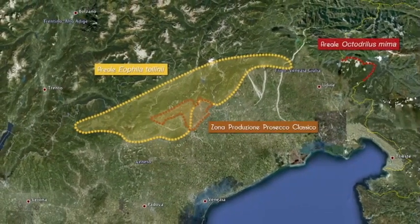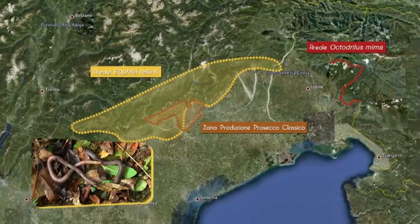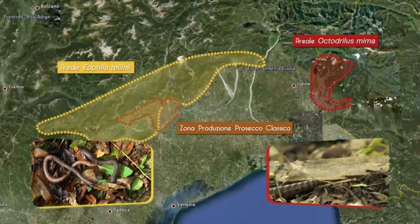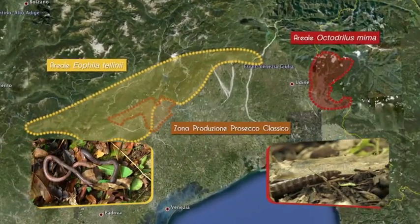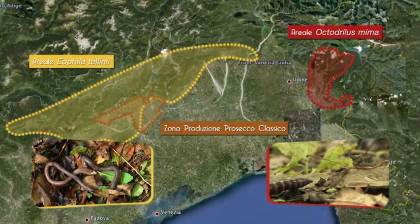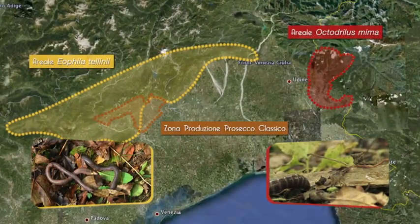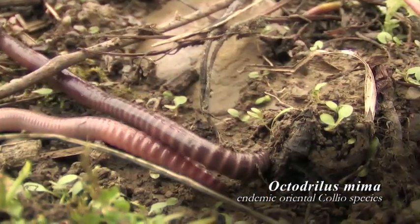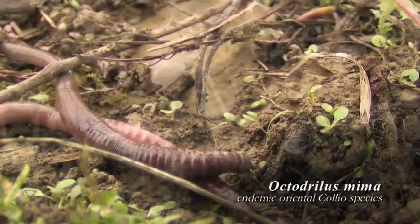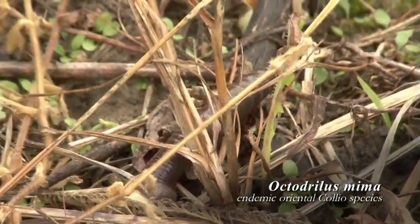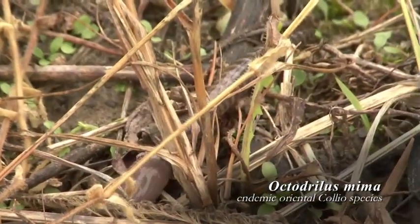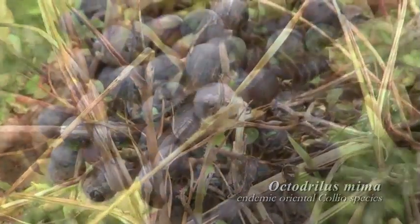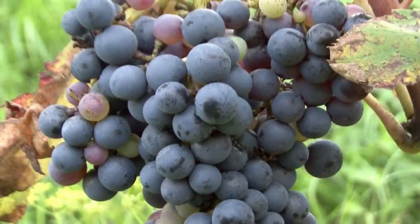It is interesting to reflect on the fact that Eophila tellini and Octodrilus mima, both species belonging to the category of deep burrowers, have a restricted area of distribution. These species are influential in soil formation and development and are endemic to two areas of great importance for wine production. The quality of the wines from these areas is closely related to the activity of these earthworms.